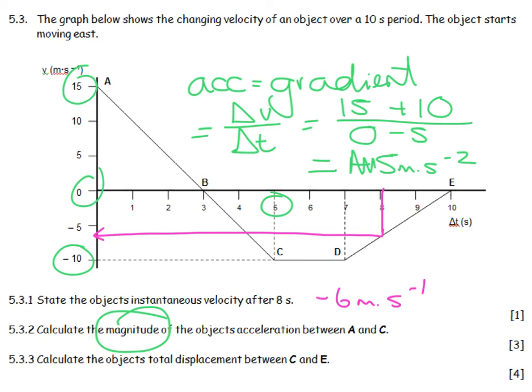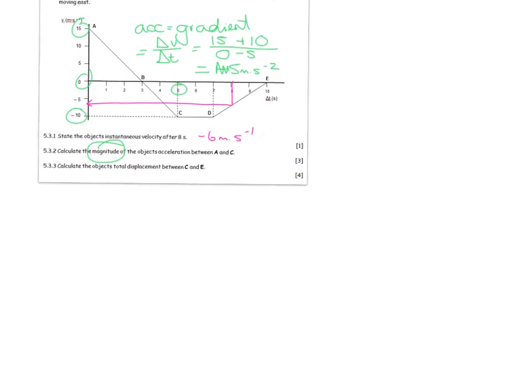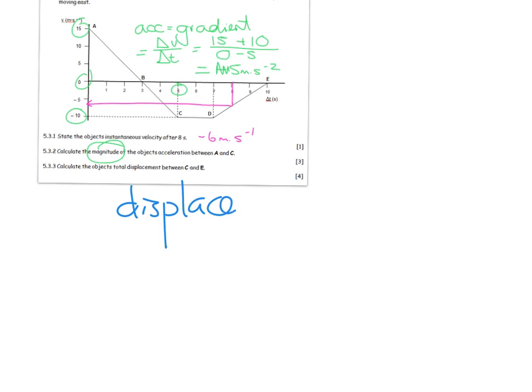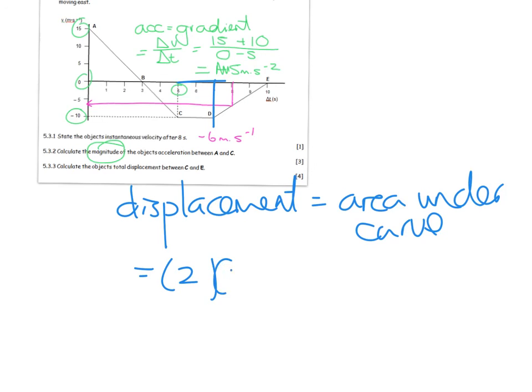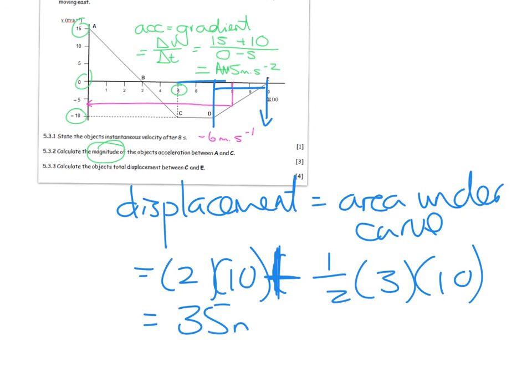Calculate the object's total displacement between C and E. So displacement is, again, help me to give you marks. Displacement equals area under curve. And then I can say, that is equal to the length times the breadth, which is going to be 2 times by 10, plus, I'm now in a triangle, half of the base, 7 to 10 is 3, times by the height of that triangle, 10, and I land up with 35 metres. They want displacement. Displacement includes a direction. All of this happened in a westerly direction.